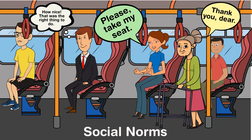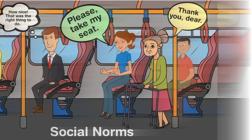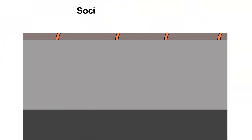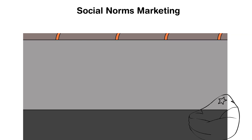Because social norms are such powerful indicators of behavior, marketers can use these norms or known predictable behaviors as tools of influence and persuasion using something called social norms marketing theory.